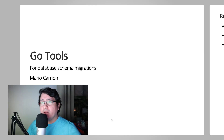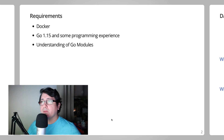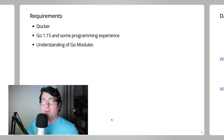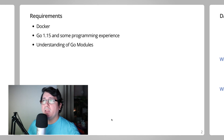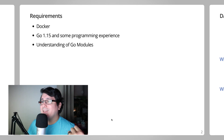Hi, my name is Mario. Welcome to another video. Today we're going to be covering some Go tools for database schema migrations. This is going to be a hands-on video with demos. We'll require a few tools installed — one of them will be Docker for running the database, Go 1.15, and a little bit of understanding of Go modules. All the code is available on GitHub and the link is in the description.